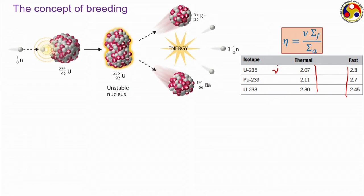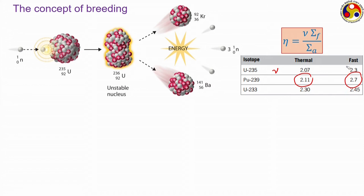The value of nu is generally greater than 2. For common isotopes like U-235, U-233, or Pu-239, nu is in the range of 2.07 to 2.3 on average for thermal neutrons. When the same isotopes are subjected to fast neutrons, these numbers are much higher — ranging from 2.3 to 2.7. For example, plutonium-239 has nu equal to 2.11 for thermal fission, whereas it is 2.7 for fast fission — a significant increase in neutron availability. Multiplying nu by the fission cross section and dividing by the absorption cross section gives the value of the thermal fission factor.